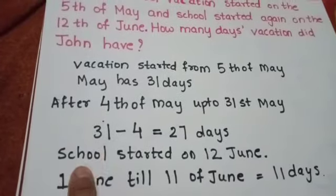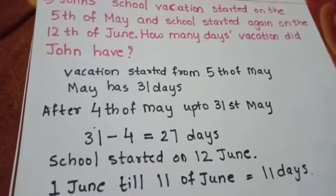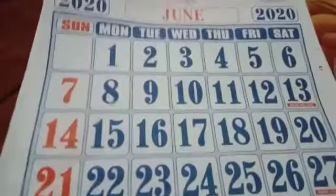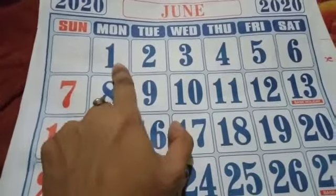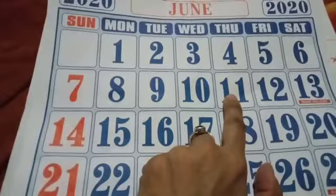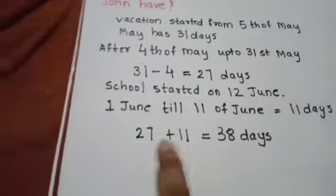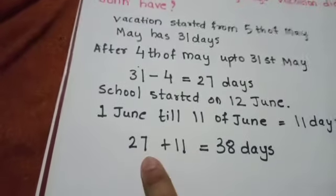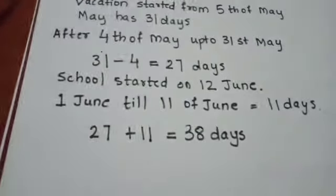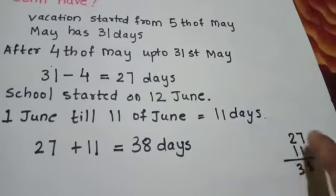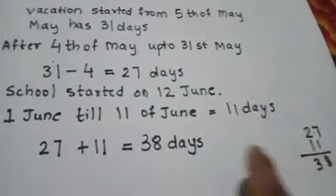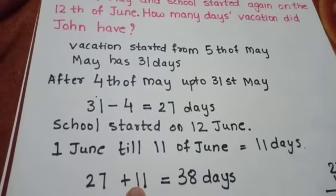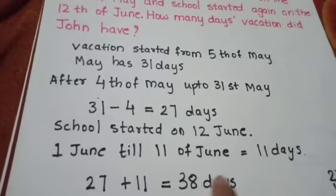Now we will count for the month of June. School started on 12th of June. So from 1st till 11th, he was having vacation. So 11 days of June plus 27 days of May. 27 plus 11: 7 plus 1 is 8, 2 plus 1 is 3. Total 38 days. John has got total 38 days for vacation — 27 days of May and 11 days of June.